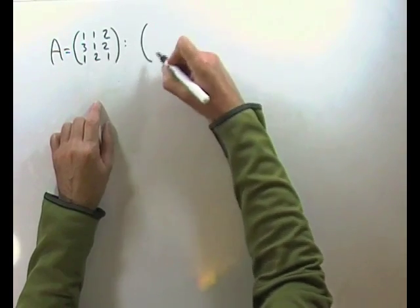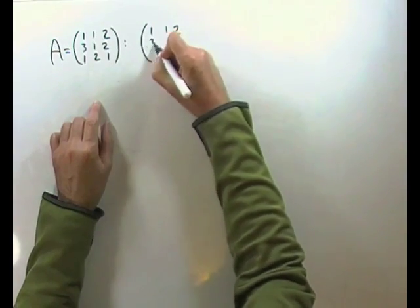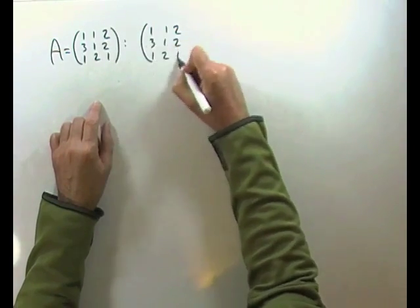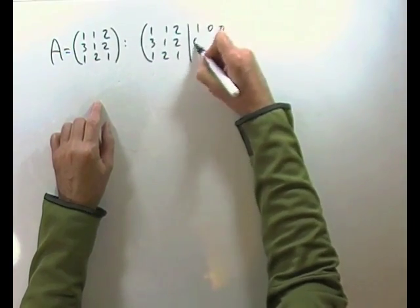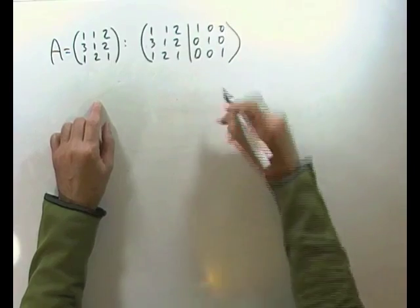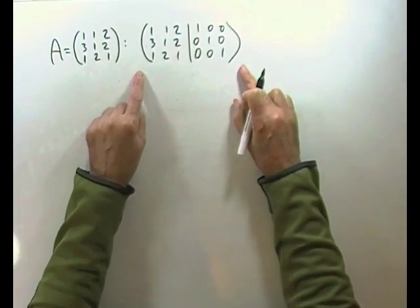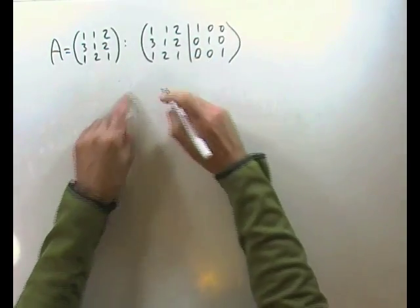But instead of doing them side by side, I could run them together. You could bolt one matrix onto the other one. They're still separate from each other, but you could bolt them together into an augmented matrix, just so you can run through the same operations.